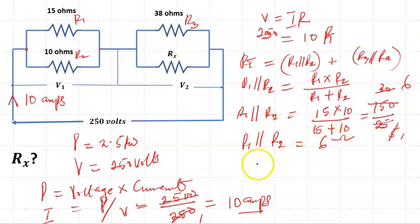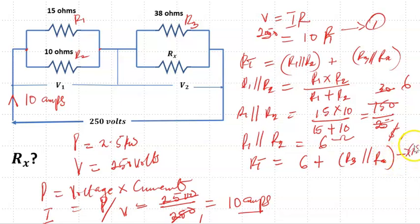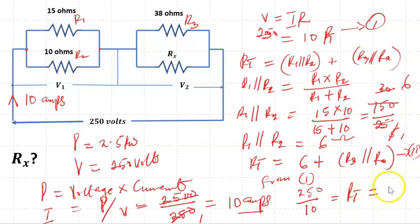Now that R1 parallel R2 is 6 ohms, the total resistance RT equals 6 ohms plus the parallel combination of R3 and Rx. From Ohm's law, RT equals 250 divided by 10, which is 25 ohms.